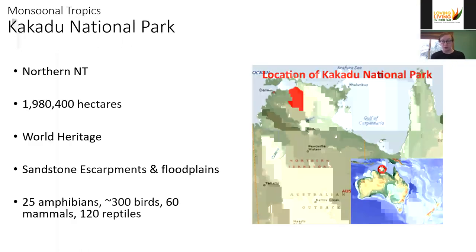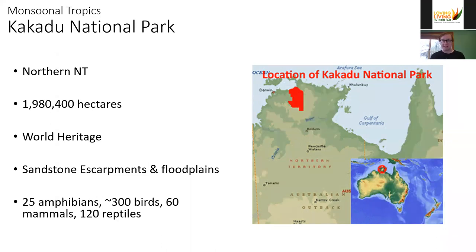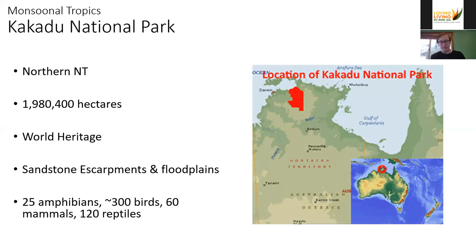Kakadu National Park is just shy of two million hectares — basically the entire area from Wollongong up to Newcastle — and the entirety of that area is a national park in pretty good condition. It's a World Heritage area, and I really hope some of you have had the opportunity to visit. I was lucky enough to go back in February of this year; you really have to go at some point. It has a lot of different habitat types, going right to the coast with mangrove forests, but it's most well known for its large impressive sandstone escarpments and its floodplains.